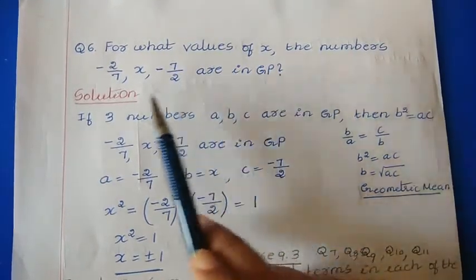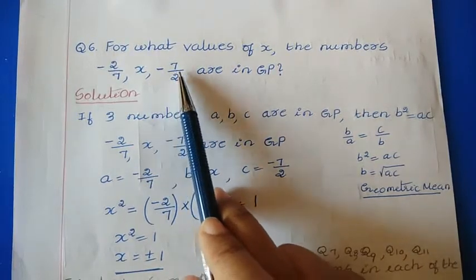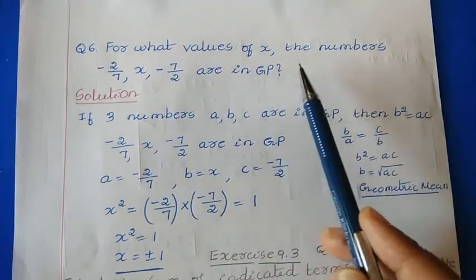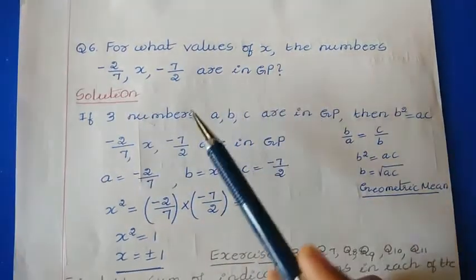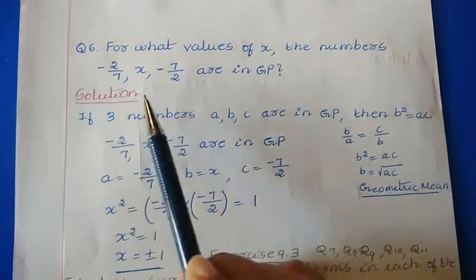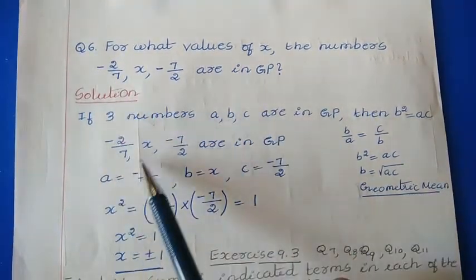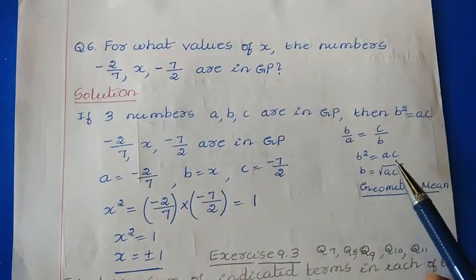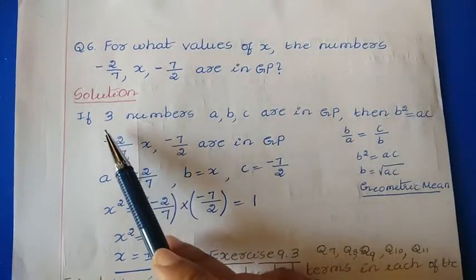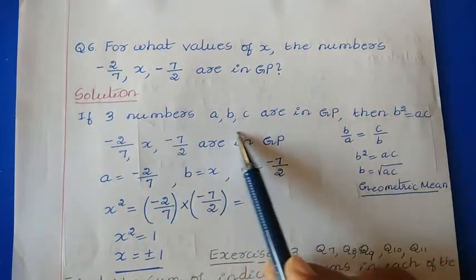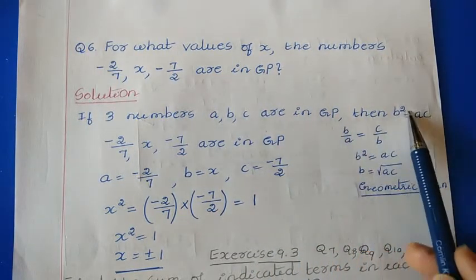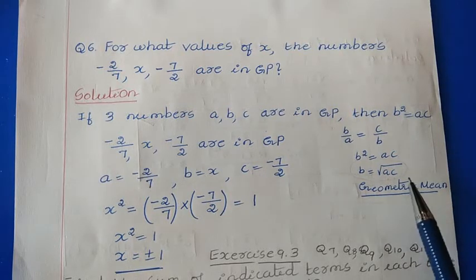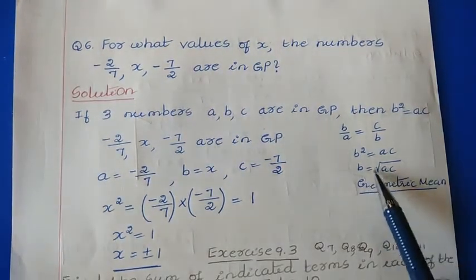For odd values of x, the numbers -2/7, x, -7/2 are in GP. We need to find the x value, that is, for what values of x these numbers form a geometric progression. There is a formula known as the geometric mean: if three numbers a, b, c are in GP, then b² = ac, or equivalently b = √(ac).